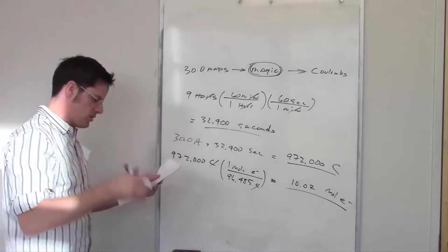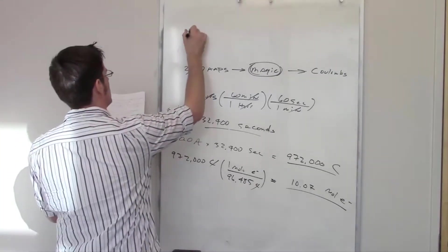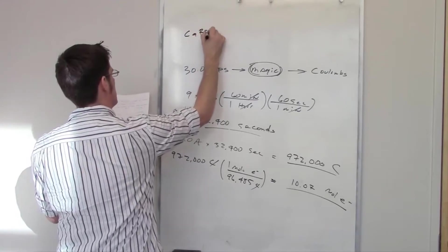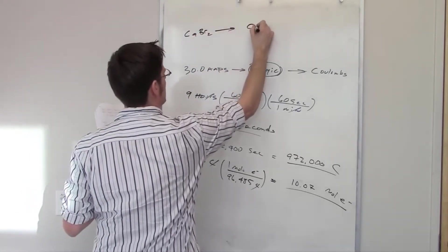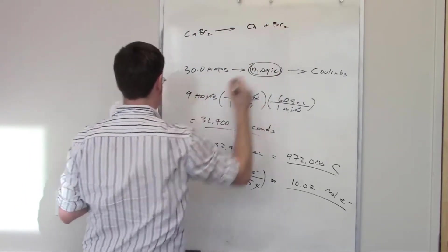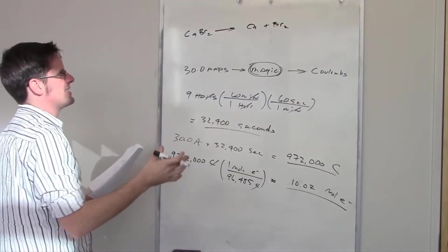In order to do this, we're going to have to write out our equation. So here's our actual reaction. It tells me that I've got calcium bromide converted into calcium and bromine.